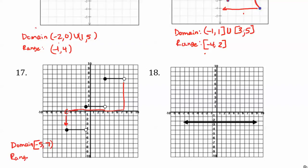For the range, locate the lowest value, which is at negative 4. Moving up, there's a big gap — the graph jumps from negative 4, not connected, to another y-value at 1, and then there's another gap up to 7. So just those three numbers are in the range. When that happens, it's not an interval from low to high. You just list those separated numbers — negative 4, 1, 7 — as a set using roster notation with curly braces.